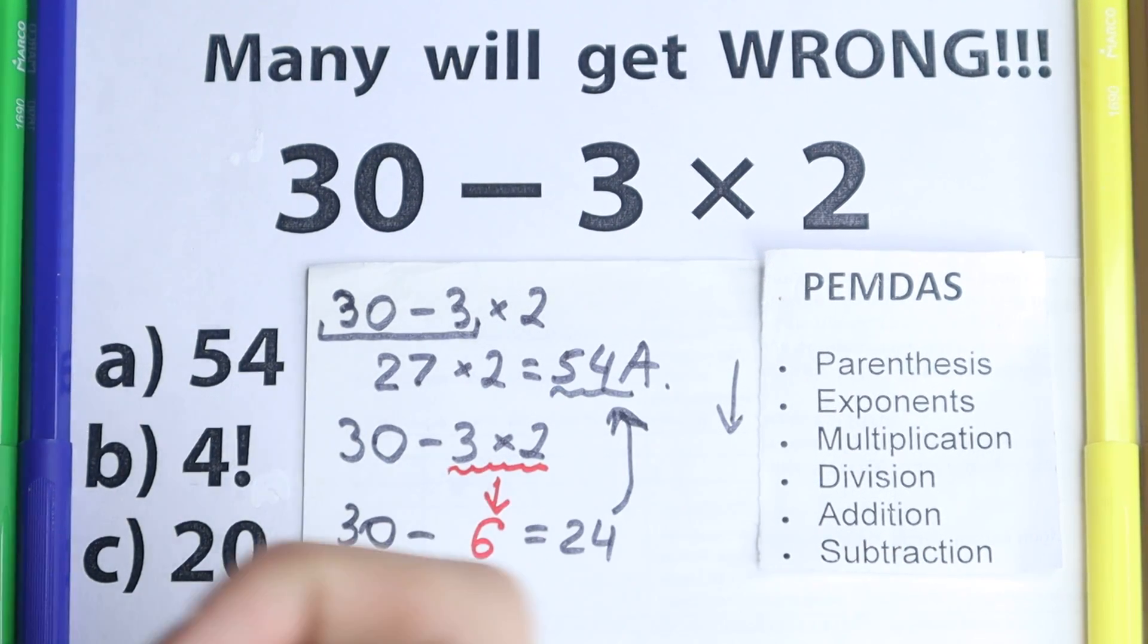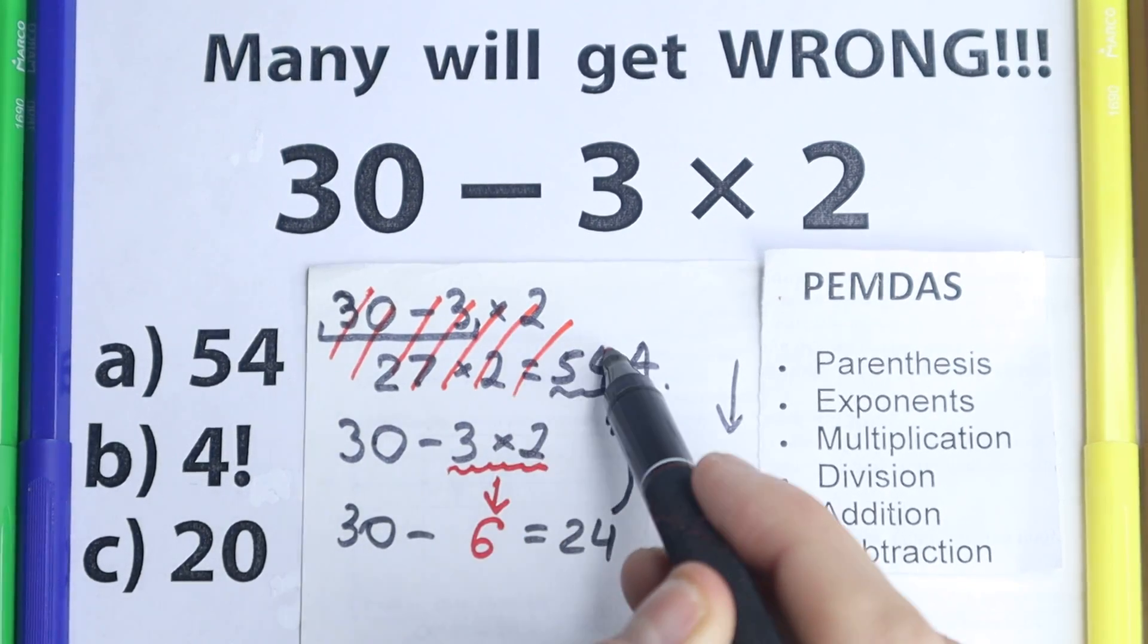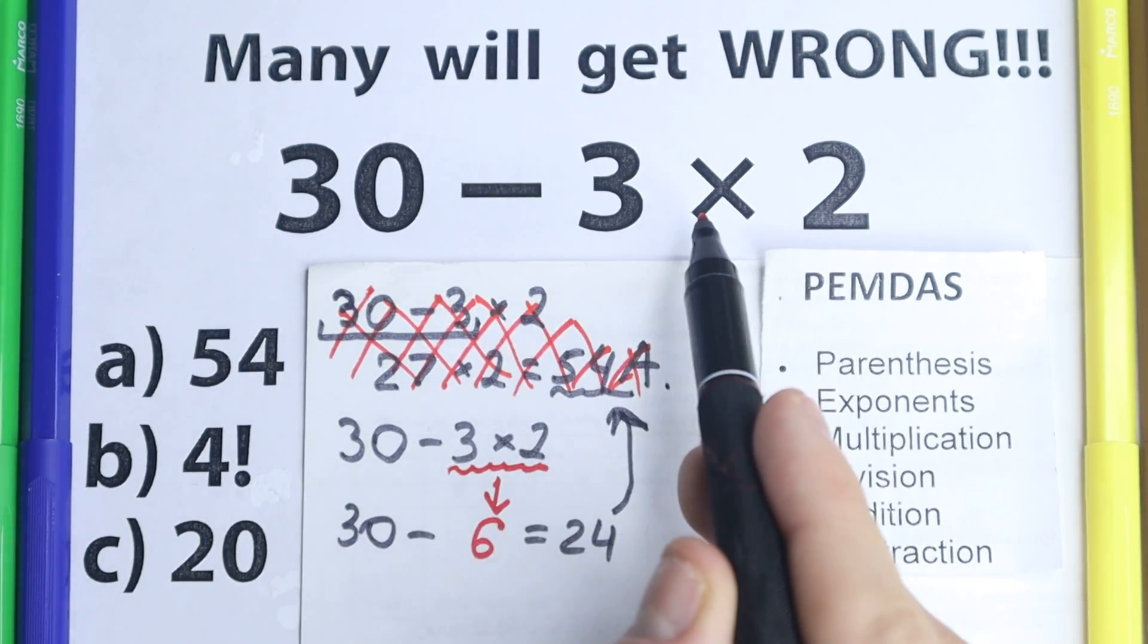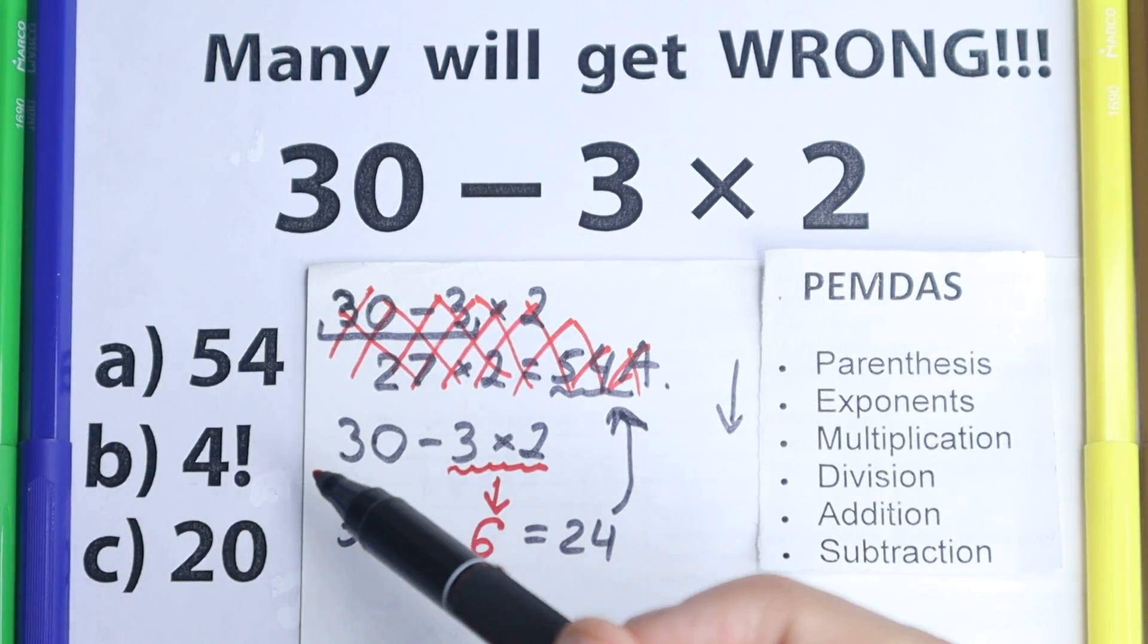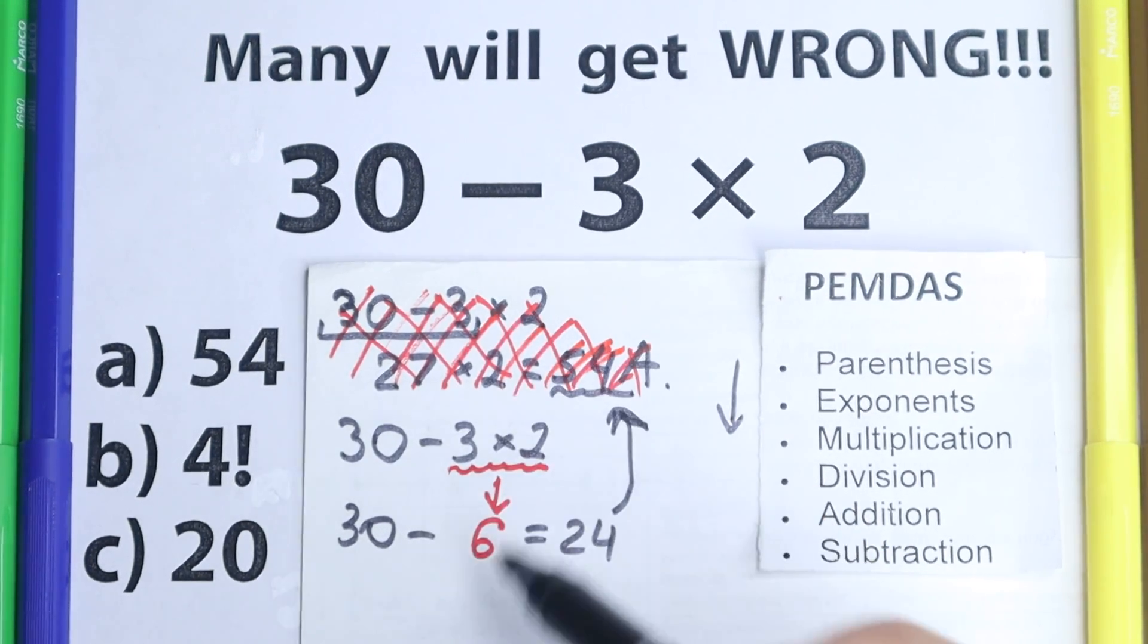But I want to reject, I want to cancel this wrong solution because this solution is not according to order of operations. This is like maybe an obvious solution. You subtract first from left to right, you multiply, you have this option. It looks right in our minds, but according to order of operations, this is absolutely the wrong solution.